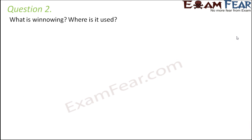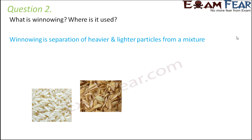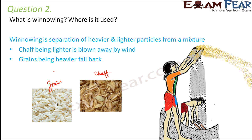Question number 2: what is winnowing, and where is it used? Winnowing is a separation technique where we separate heavier particles from lighter particles using wind. The most common example is separating grain seeds from chaff — chaff being the outer covering of the grain seeds, which is very light. When winnowing is done, the chaff is carried away by the wind while the heavier grain seeds fall back and are collected separately.